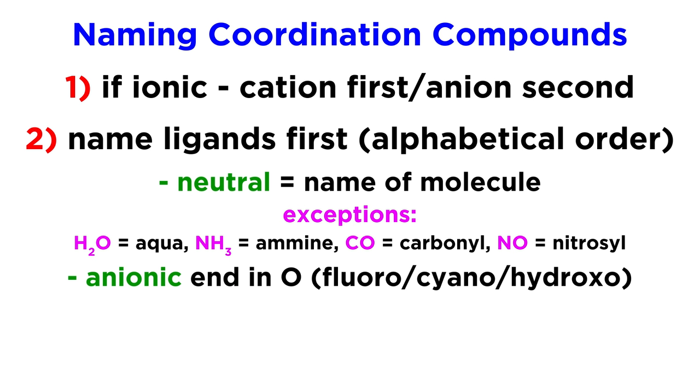For anionic ligands, these will end in the letter O, and the names will be quite intuitive, like fluoro, bromo, and the rest of the halogens, as well as others like cyano or hydroxo.